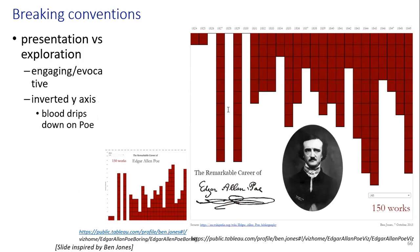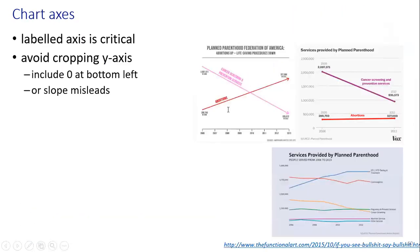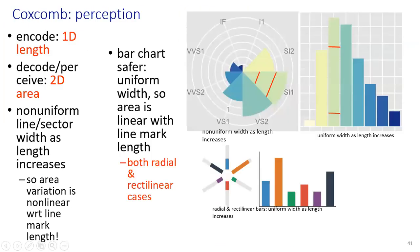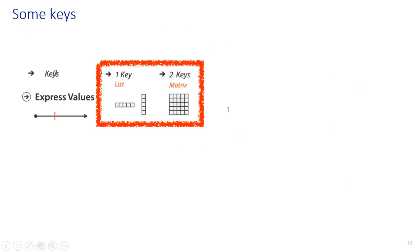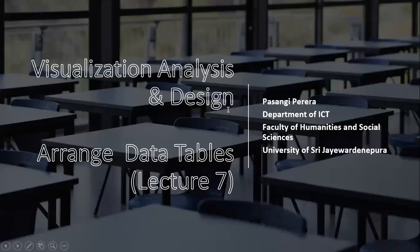Sometimes we have to break conventions — presentation versus exploration matters, and also what is engaging or evocative. Inverted y-axis is one example for blood drops down on foil. That is all about the entire lecture on visualization, analysis and design.